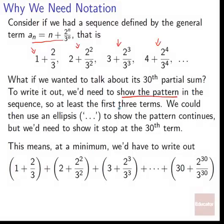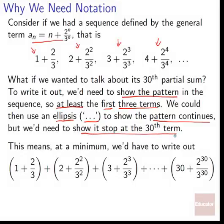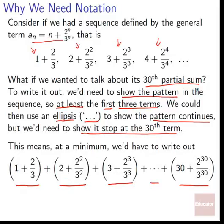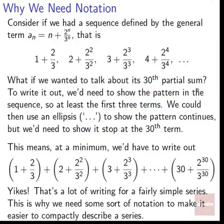We'd need to show the pattern by writing at least the first three terms, then use an ellipsis to say the pattern continues, and still show the stop at the 30th term. So at a minimum we'd have to write: (1 + 2)/3 + (2 + 2²)/3² + (3 + 2³)/3³ + … + (30 + 2³⁰)/3³⁰. That's a lot of stuff to write out — yikes! That's a lot of writing for a fairly simple series.